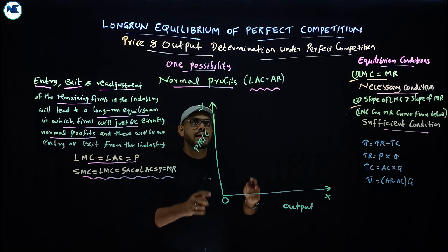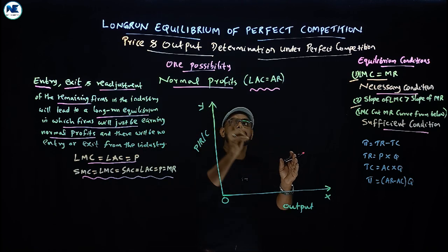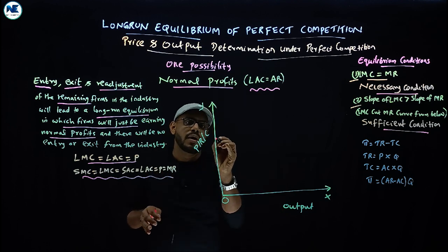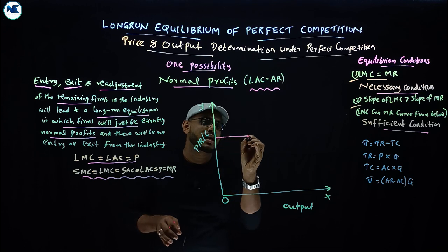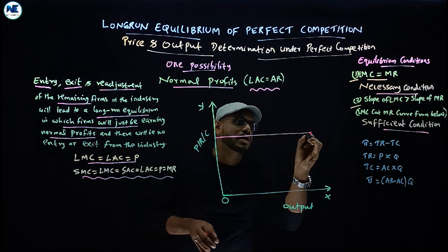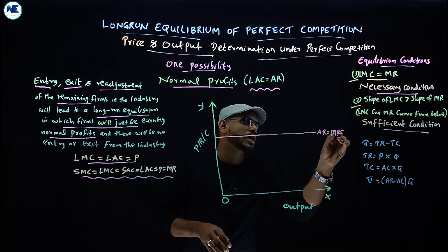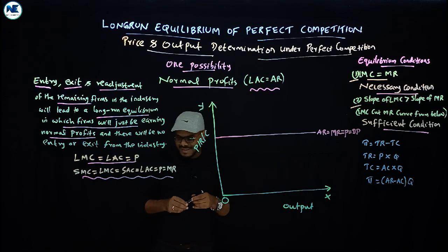Now let's look at the diagram for equilibrium under perfect competition during the long period. Average revenue, marginal revenue, and price are all on the same horizontal straight line — this is the demand curve facing the firm, since AR equals MR equals Price.